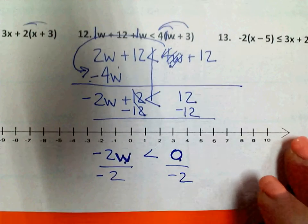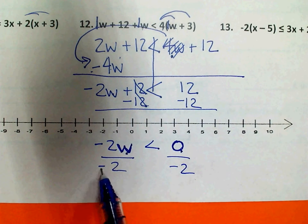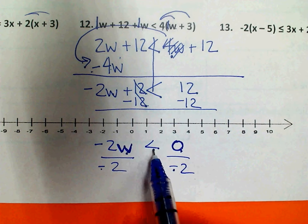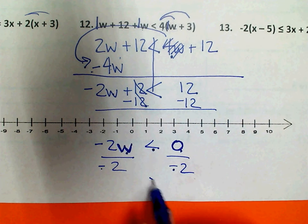Now remember, on an inequality, when you divide both sides by a negative, your sign changes directions. So now instead of a less than sign, I'll have a greater than sign.